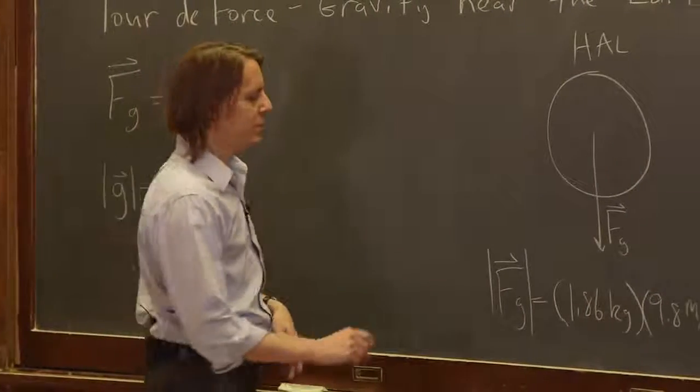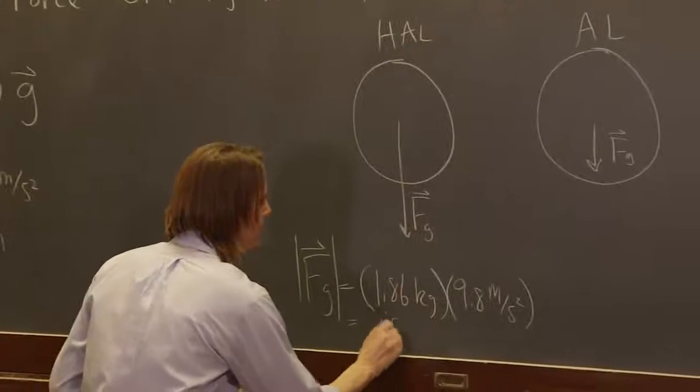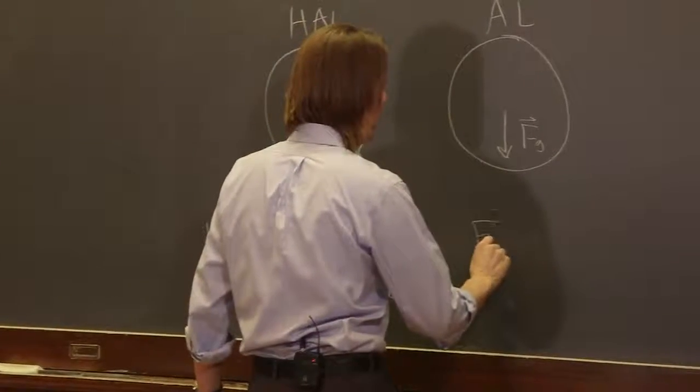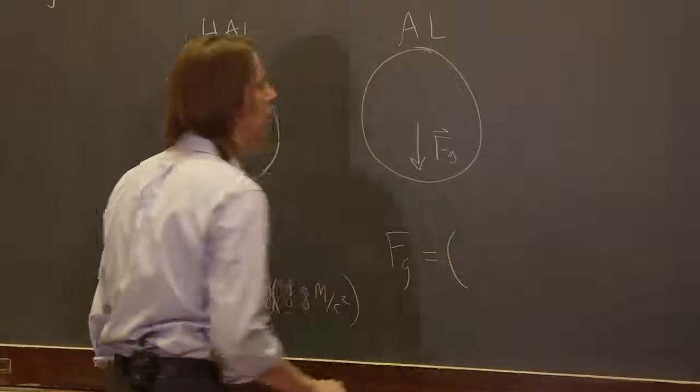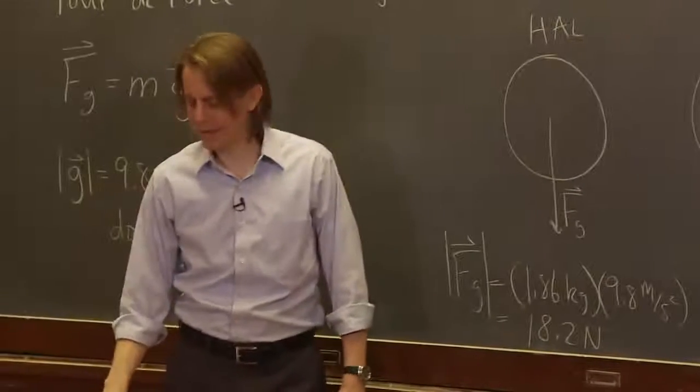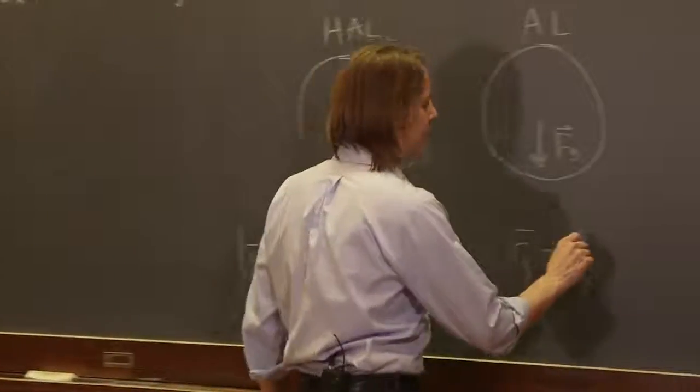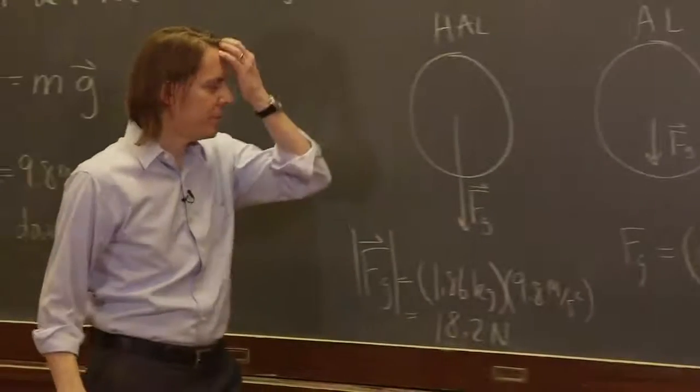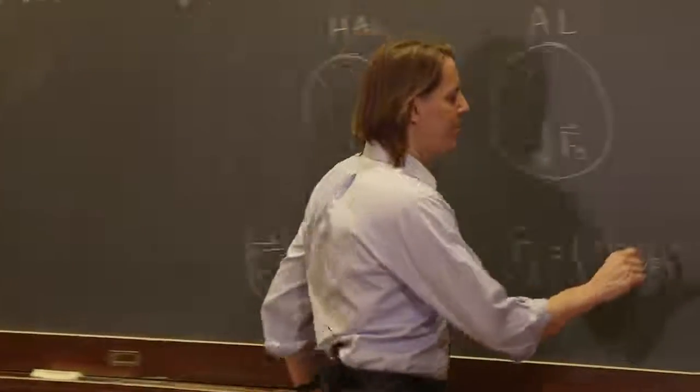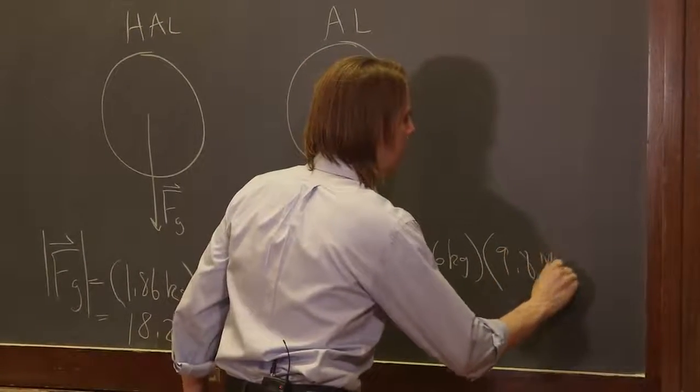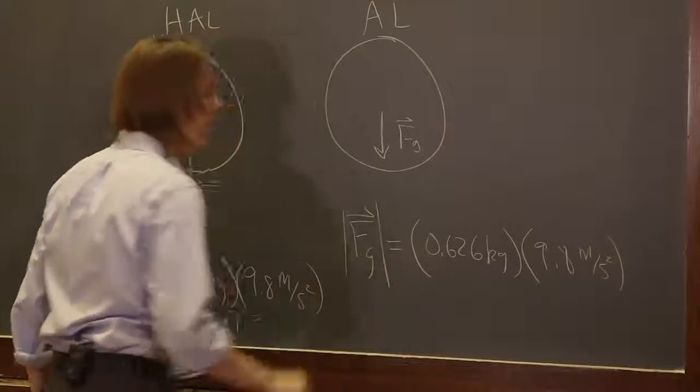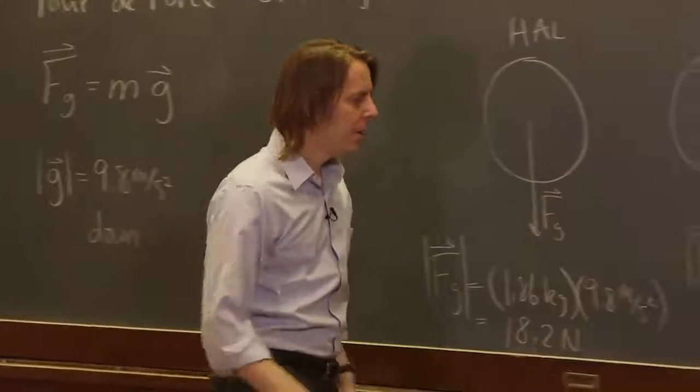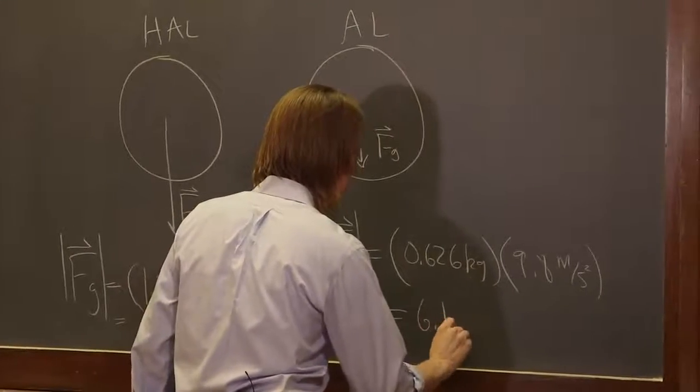What does that give us? It gives us 18.2 newtons. And then over here we'll look at Fg for Al. Al, aluminum, has about a third the density of steel, so it's about 0.626 kilograms. It's the same volume, they're the same size, times 9.8 meters per second squared. And of course I'm calculating the magnitude of that force. So you multiply those out and you get about a third: 6.1 newtons.